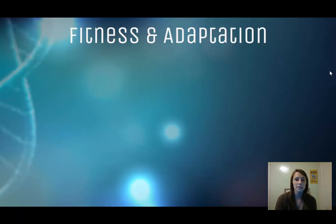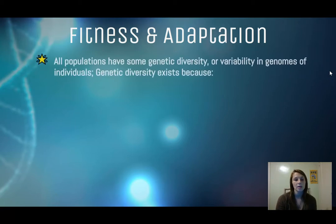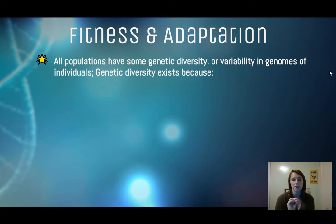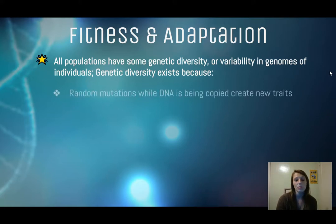The first thing we're going to talk about is how fitness and adaptations are connected. Remember that all populations have some genetic diversity or variability in their genomes of the individuals. This is at an individual level, so two different mice in the same population are going to have slight genetic diversity between each other. Now genetic diversity exists for a few different reasons — one of those is when random mutations occur while DNA is being copied, and this can create new traits.